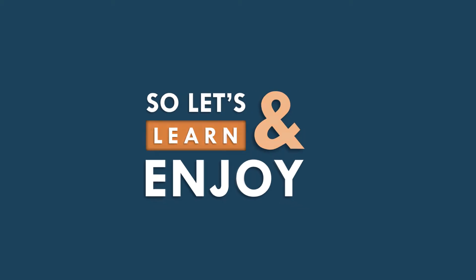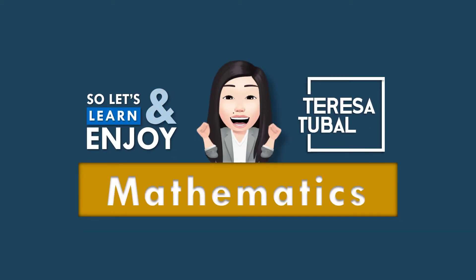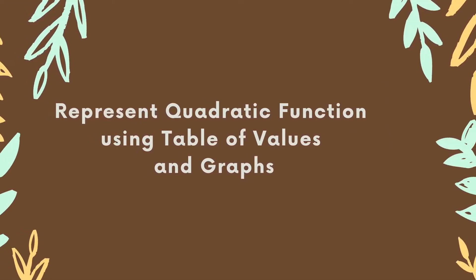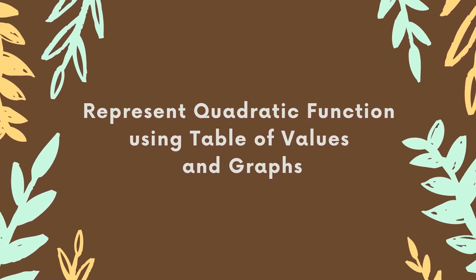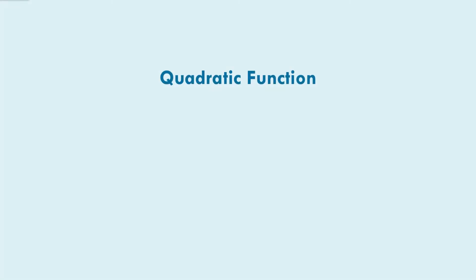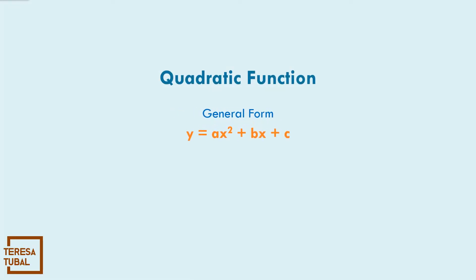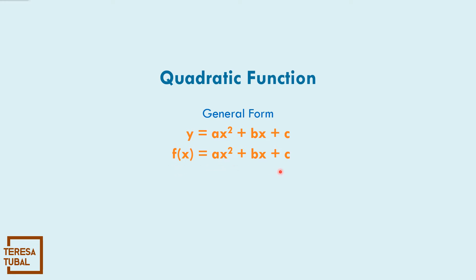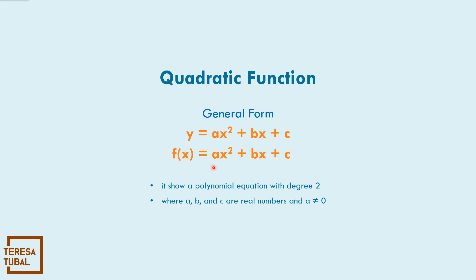Let's learn and enjoy mathematics. Let us represent quadratic function through table of values and graphs. The quadratic function in the general form is y equals ax squared plus bx plus c. You can replace the value of y by f of x, so this is also a quadratic function: f of x equals ax squared plus bx plus c, where it shows the polynomial equation with degree of 2. The highest degree of the quadratic function is 2. a, b, and c are real numbers, and the value of a should not be equal to 0.